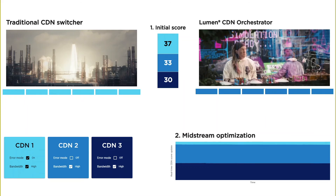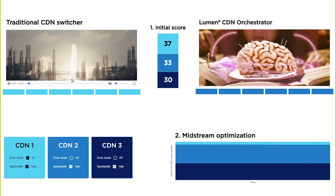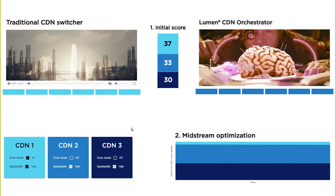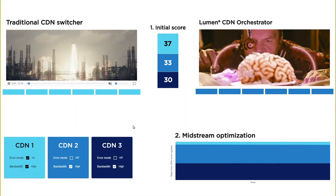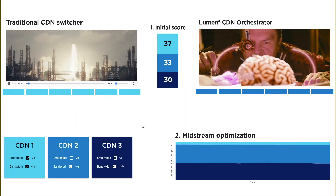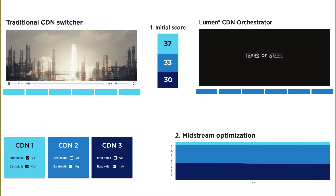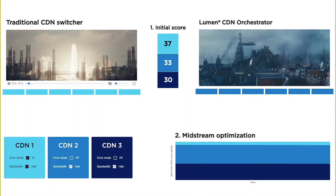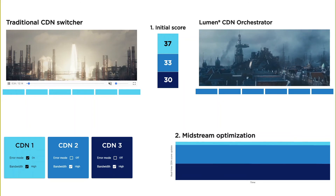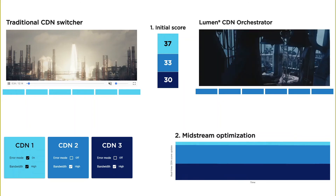You'll notice that the CDN switch was done seamlessly without having to refresh the page. The player using a traditional CDN switcher is frozen. This is another advantage of CDN Orchestrator — if your primary CDN goes down without a midstream switching tool, there's a good chance that a large number of users will instinctively try to refresh their page at the same time.